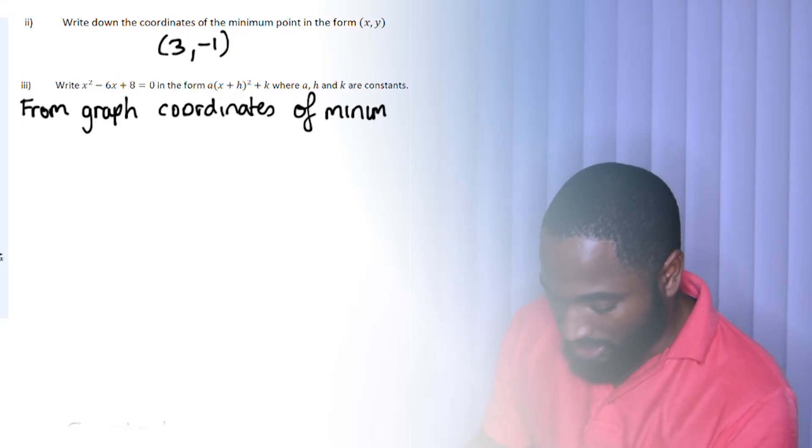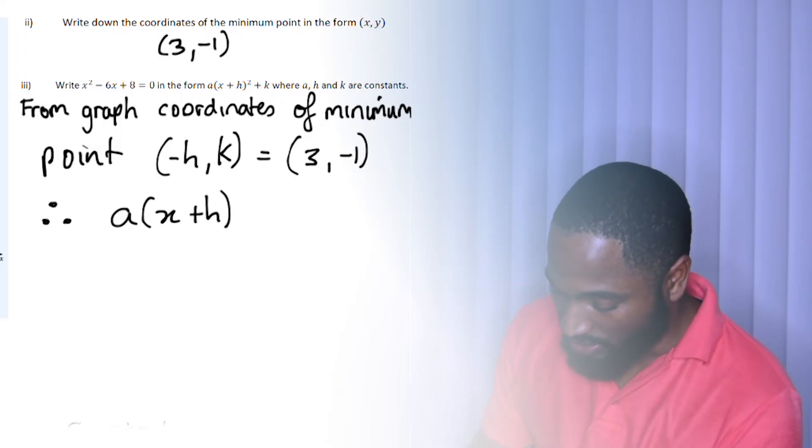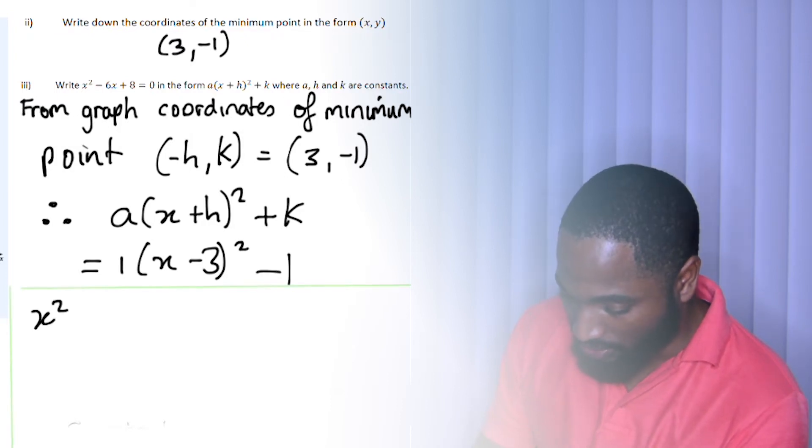From the graph, let's look at one quick method you could use. When you complete the square, this h is the x-coordinate—well, negative h is the x-coordinate—and k is the y-coordinate of the minimum point. So using those same values, from graph coordinates of minimum point, there's -h and k, so it's equal to (3, -1). Therefore a(x + h)² + k.